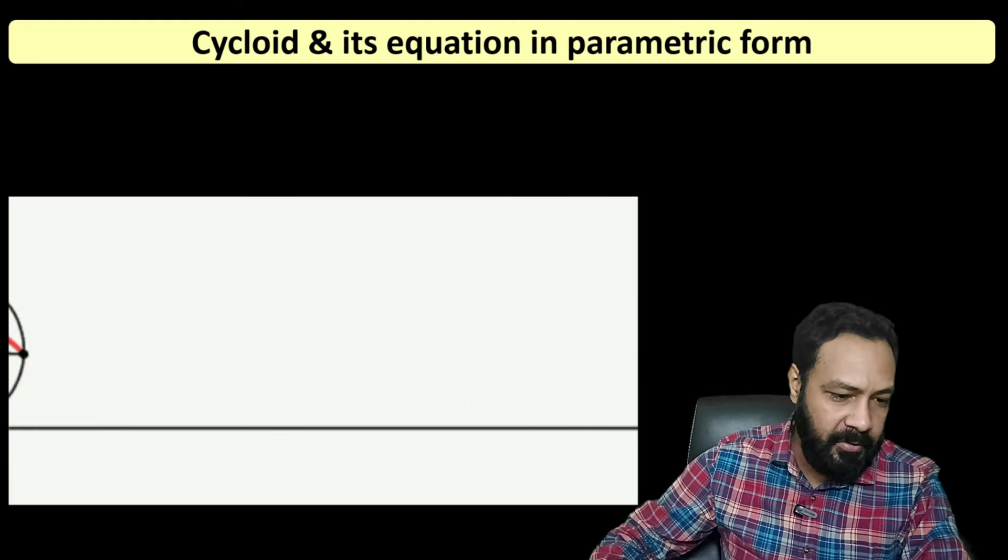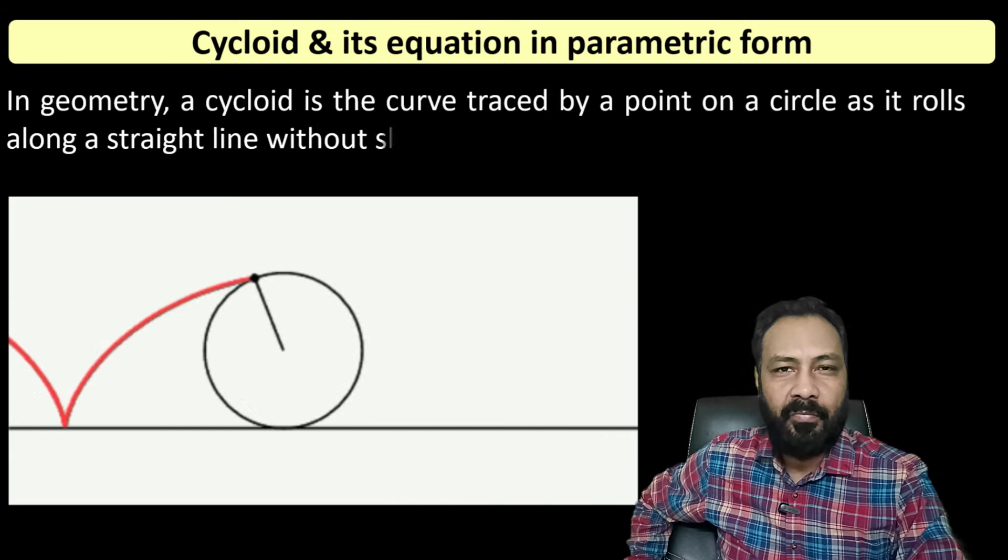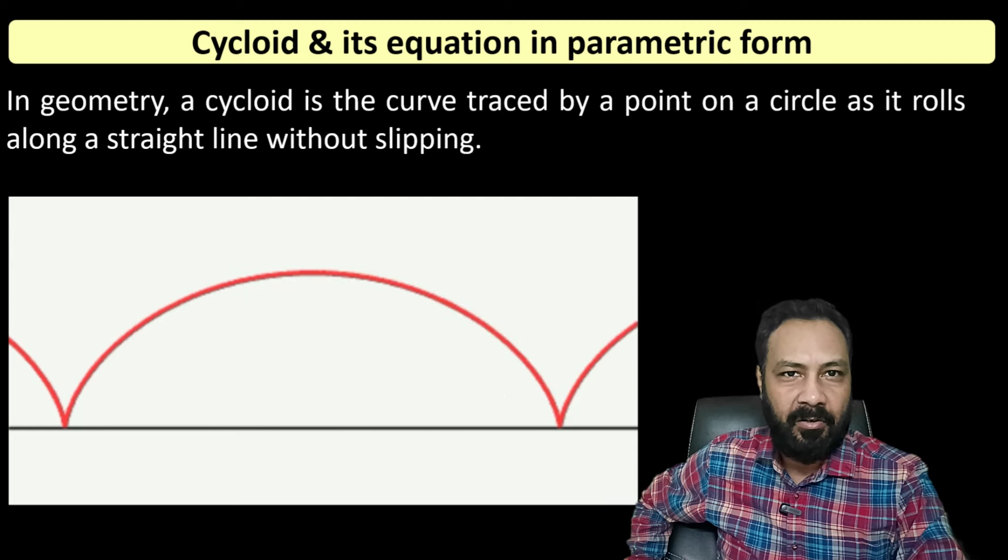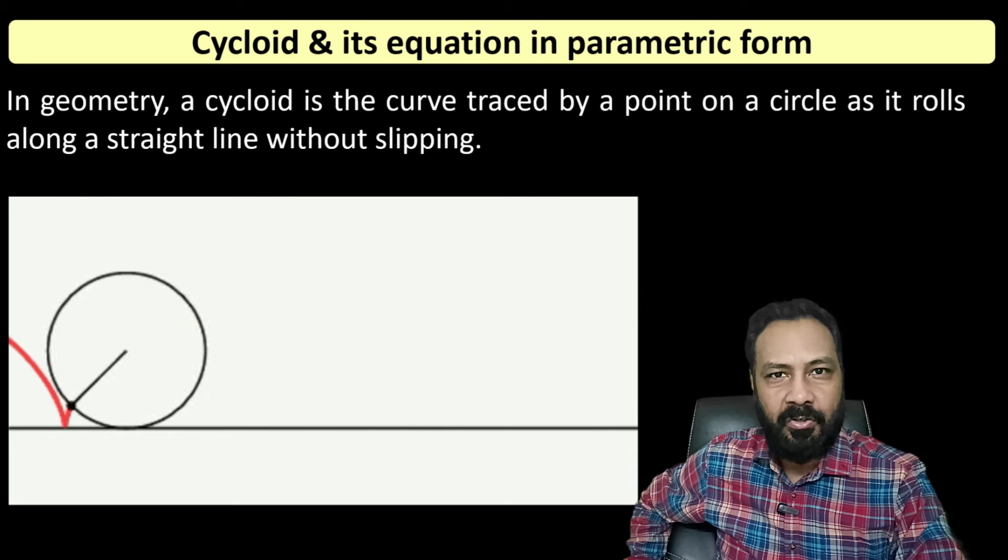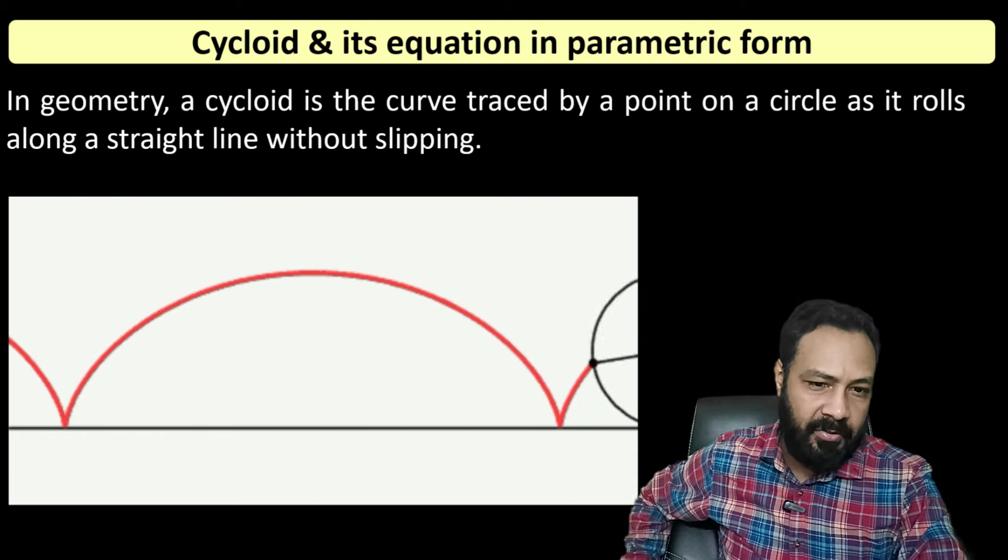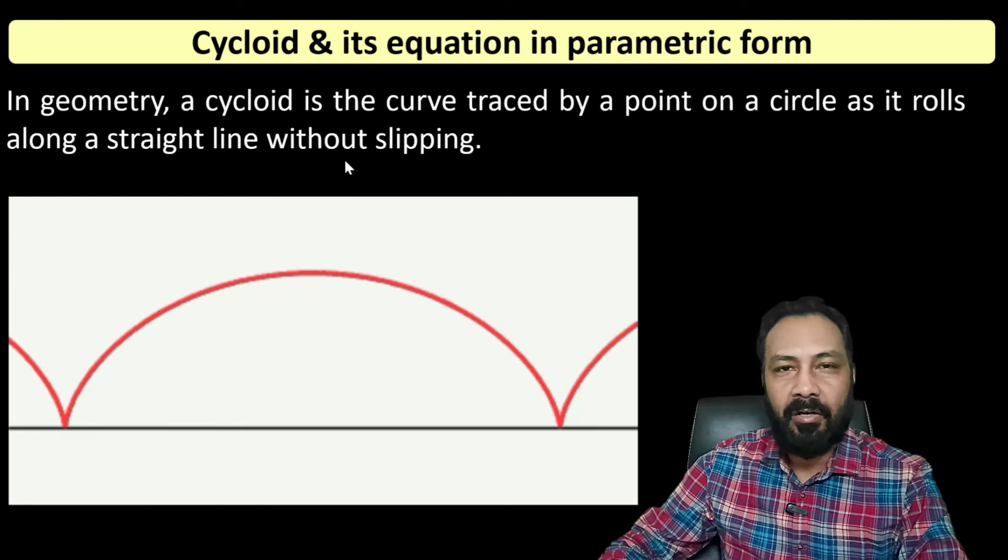So what is a cycloid? Suppose a wheel is rolling without slipping on a fixed platform and if I pick any point on its circumference and follow the trajectory of that point, then that trajectory is what a cycloid is. So a cycloid is a curve traced by a point on a circle as it rolls along a straight line without slipping.